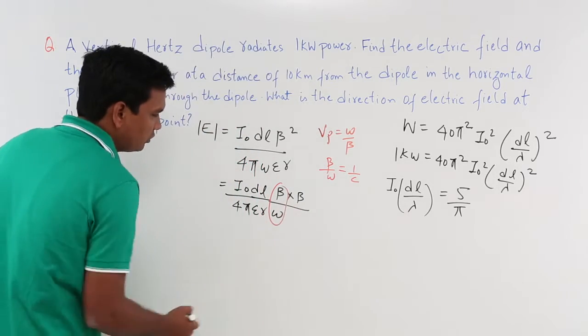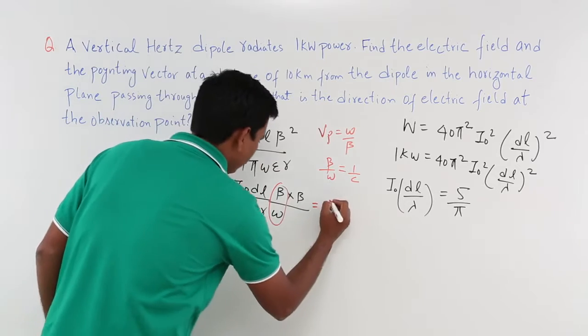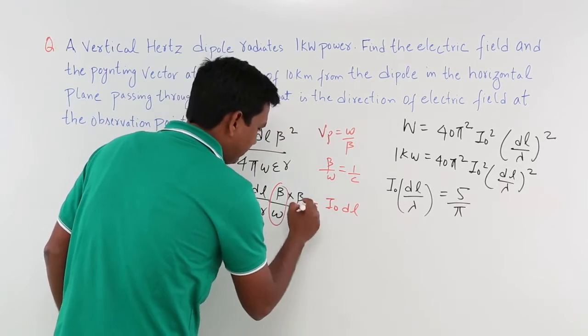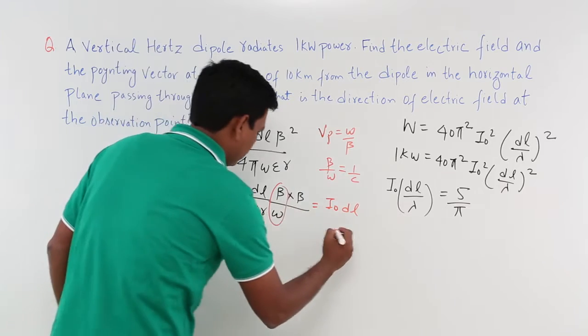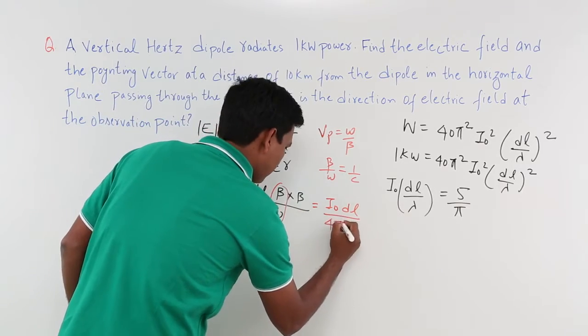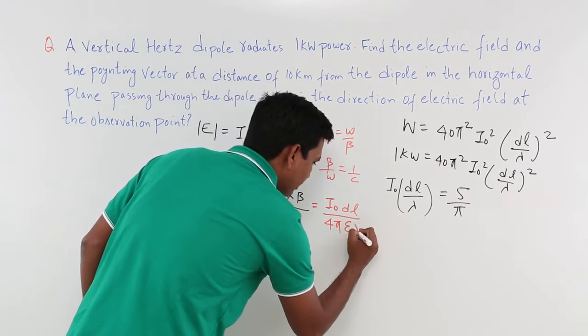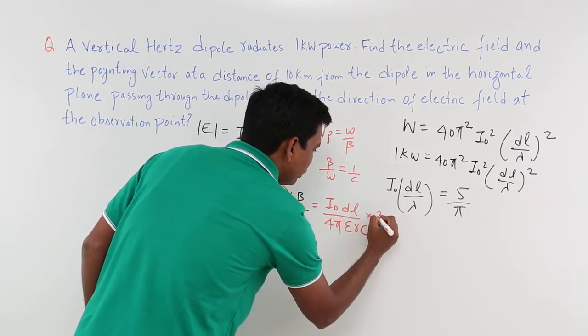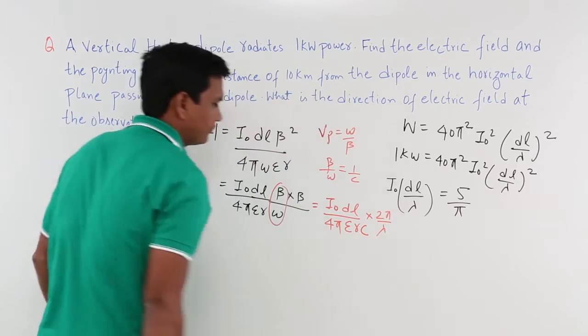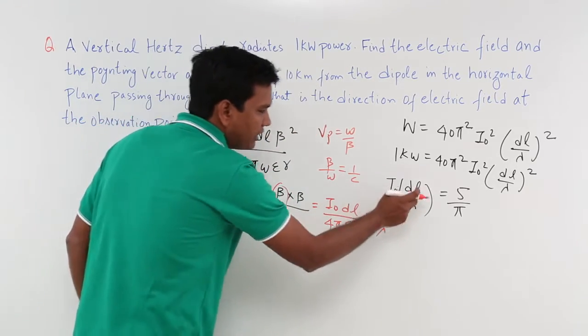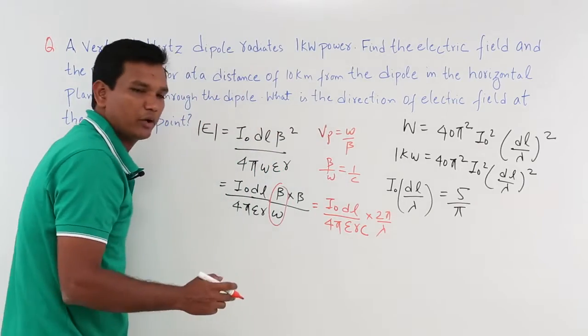So c will go down. This will be replaced with a new equation I₀DL and β I can substitute 2π/λ. So this will be nothing but 4πε₀rc into 2π/λ. I will rearrange the equation such that I already have I₀DL/λ and rest all value I already know it. So I can solve this.